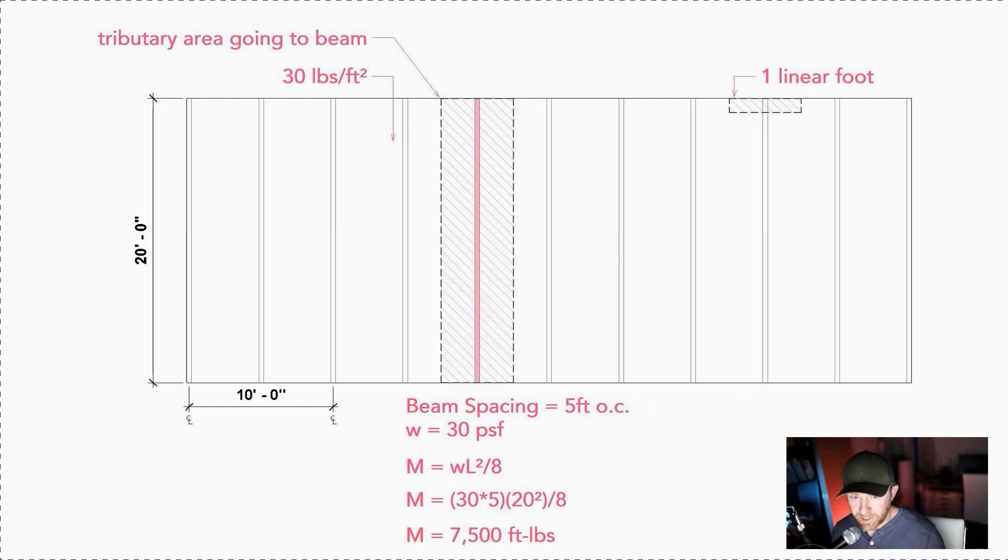The first thing you could do, and these are in no particular order, is increase or decrease the spacing of the beam. So instead of every 10 feet, you do one every five feet, which would decrease the tributary area. So if we still have the same moment formula, WL squared over eight, the length of one linear foot is actually halved because instead of getting five feet on each side, you only get two and a half feet on each side. So the length here where we're finding the actual weight goes from 10 to five. So that gets halved. The entire thing ends up getting halved as well. So the moment is going to be 7,500 foot pounds.